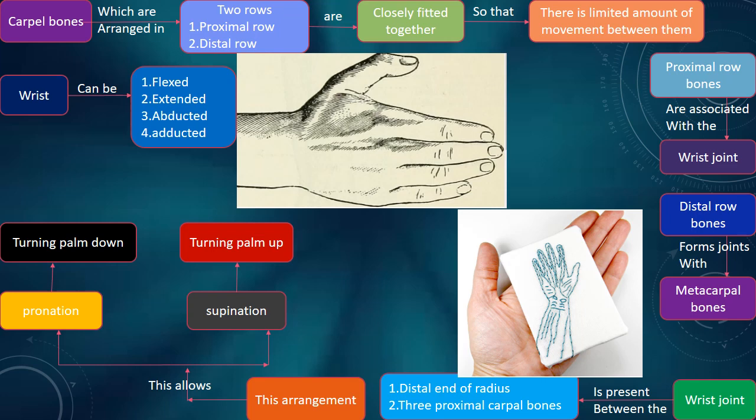The proximal row bones are associated with the wrist joint. The distal row bones form joints with the metacarpal bones.